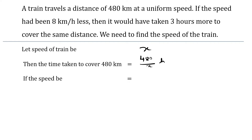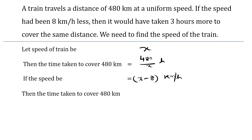Secondly, we are given if the speed had been 8 km per hour less, that is if the speed be x minus 8 km per hour, then the time taken to cover would be distance — that is 480 km — divided by speed, that is x minus 8 km per hour.